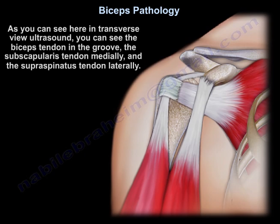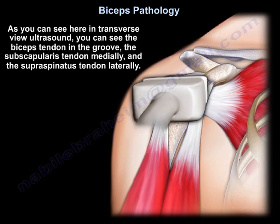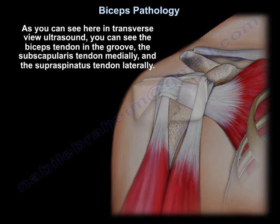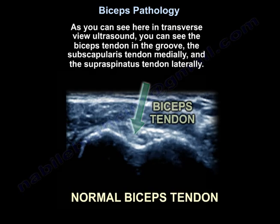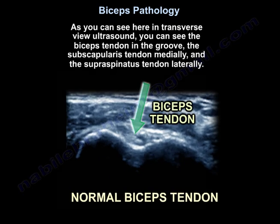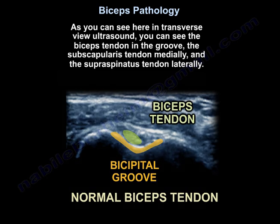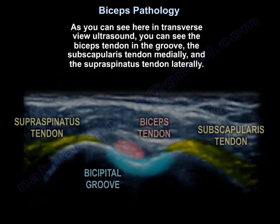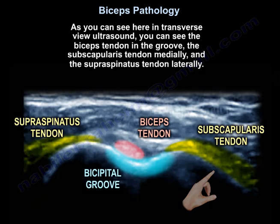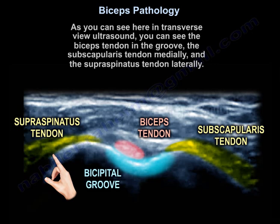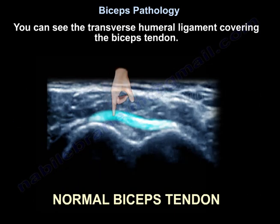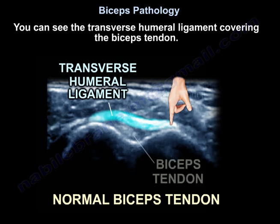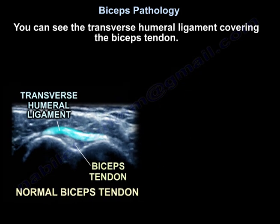As you can see here in transverse view ultrasound, you can see the biceps tendon in the groove, and the subscapularis tendon medially and the supraspinatus tendon laterally. You can also see the transverse humeral ligament covering the biceps tendon.